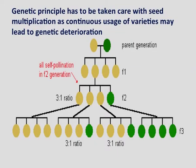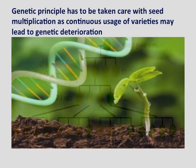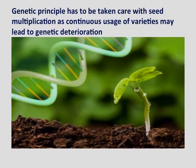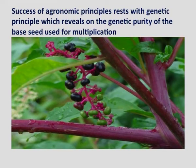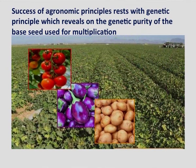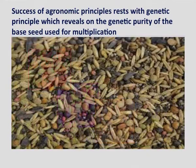In Tamil, we used to say 'Vinay Vidaitavan Vinay Aruppan, Tinay Vidaitavan Tinay Aruppan,' likewise in English, 'as you sow, so shall you reap.' Seed production must be carried out under standardized and well-organized conditions. The principles of seed production are broadly classified as genetic and agronomic principles. The genetic principles must be taken care of with seed multiplication, as continuous usage of varieties may lead to genetic deterioration, and the originality of the variety could not be obtained on further multiplication. The success of agronomic principles rests with genetic principles, which reveals the genetic purity of the base seed used for multiplication.